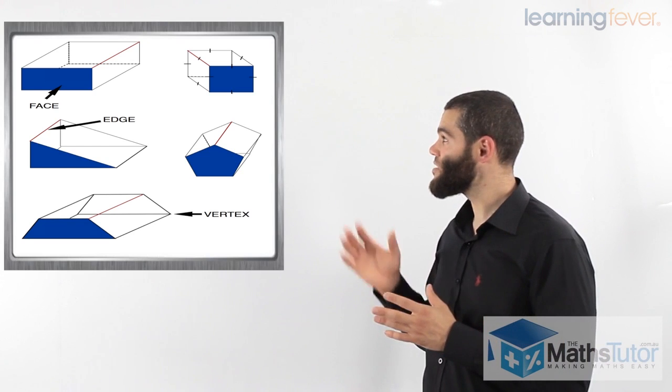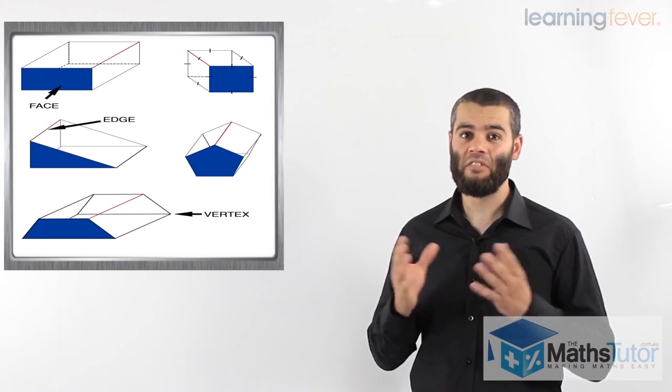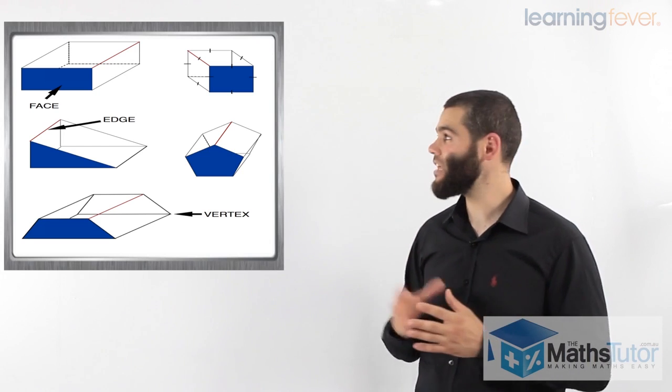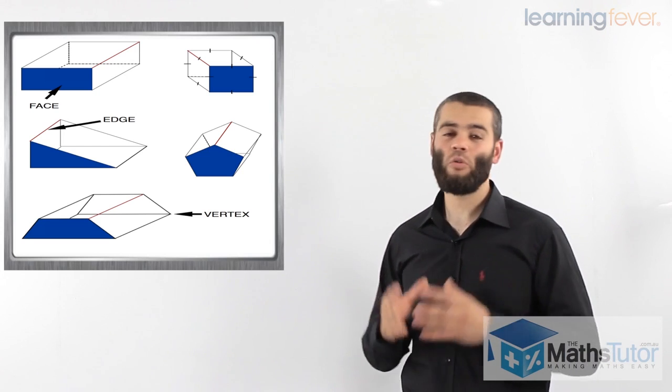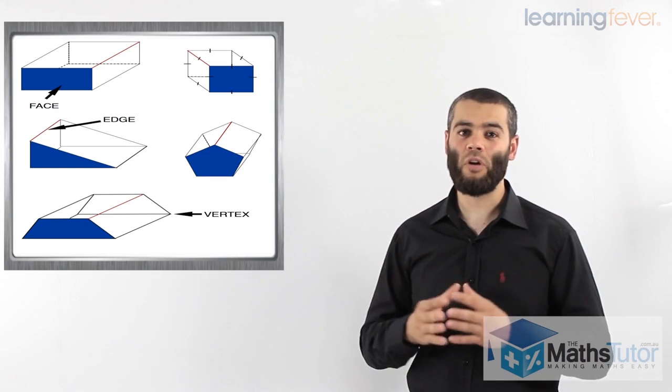So these prisms have faces. Some have more faces than others. Some have the same similar shape of face, like the rectangular prism. They're all going to be rectangles. The cube, the faces are all going to be squares.